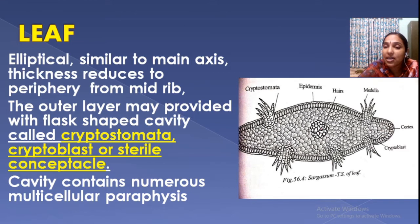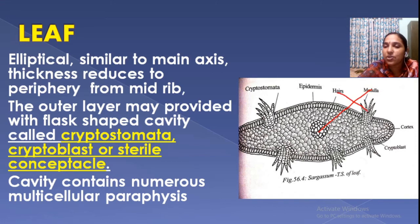When you cross-section a leaf, you can see a somewhat similar structure to the stem: a central conducting tissue, the cortical region, and the meristoderm. The medulla is the central conducting tissue. The cortex is the middle region and the meristoderm is the outermost. Inside the cryptostomata are paraphyses — hairs present in the cavity.